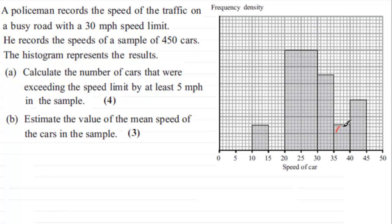And that means that we're looking for essentially the areas beyond the 35 here so it's the area of that block and the area of this block. Now when I look at this graph here we've got no scale on the frequency density axis.